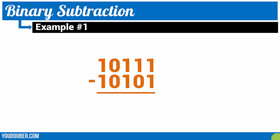Now for our first example, really easy — I just want to show you the flow of how these problems are going to go. So 1 minus 1 is 0. 1 minus 0 is 1. 1 minus 1 is 0. 0 minus 0 is 0. 1 minus 1 is 0.